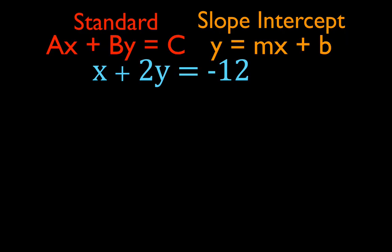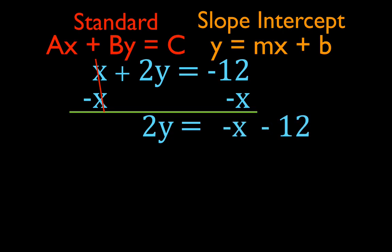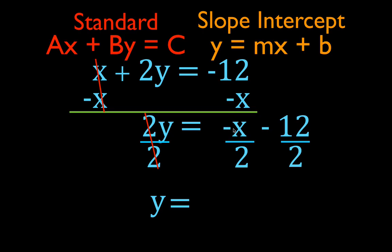Next one. We are going to add the opposite of the x-term. The x-term is x, or 1x, so we add minus x to both sides. The x's cancel, leaving 2y equals minus x minus 12. Now divide by the number in front of the y, which is 2. The 2's cancel, leaving y equals. Minus x divided by 2 — there is actually a 1 in front, we don't write it — so it is minus 1-half x. And minus 12 divided by 2 is minus 6. The slope-intercept form: y equals minus 1-half x minus 6. b is minus 6 and the slope m is minus 1-half.